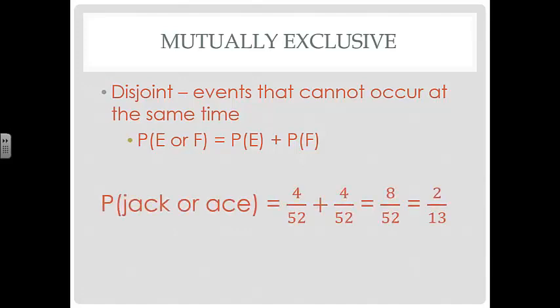For example, the probability of drawing a jack or an ace from a deck of cards. You can't draw a card that is both a jack and an ace, so these two events — drawing a jack and drawing an ace — are disjoint or mutually exclusive. The probability of drawing a jack is 4 out of 52, and the probability of drawing an ace is 4 out of 52. Adding those together gives 8 out of 52, which simplifies to 2 out of 13. Drawing a jack or an ace are mutually exclusive events.